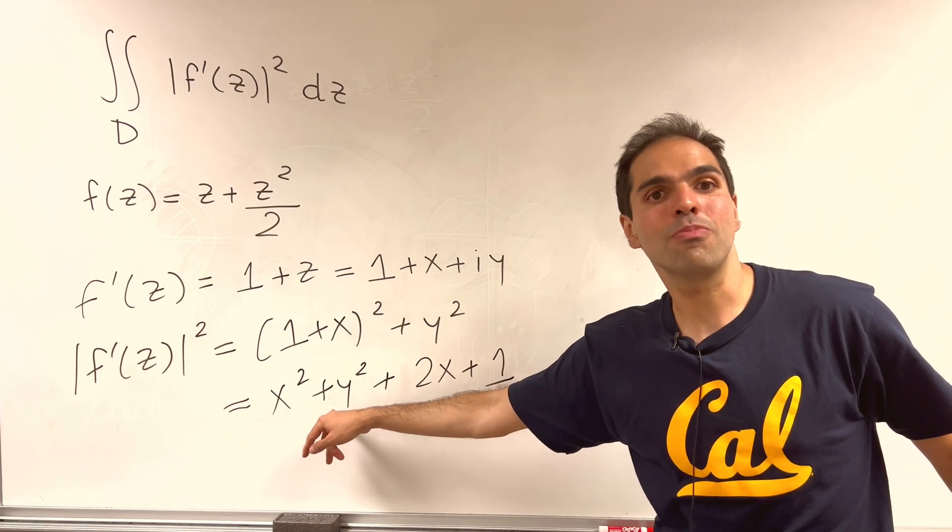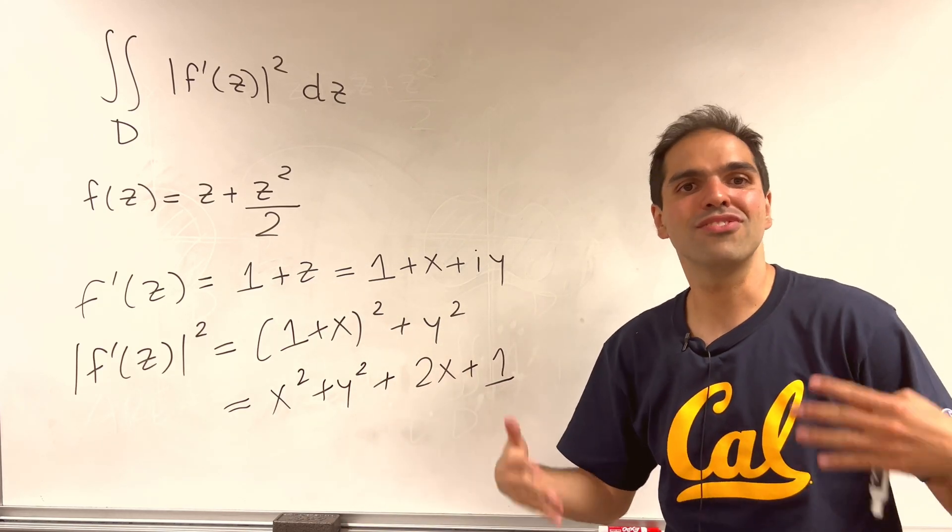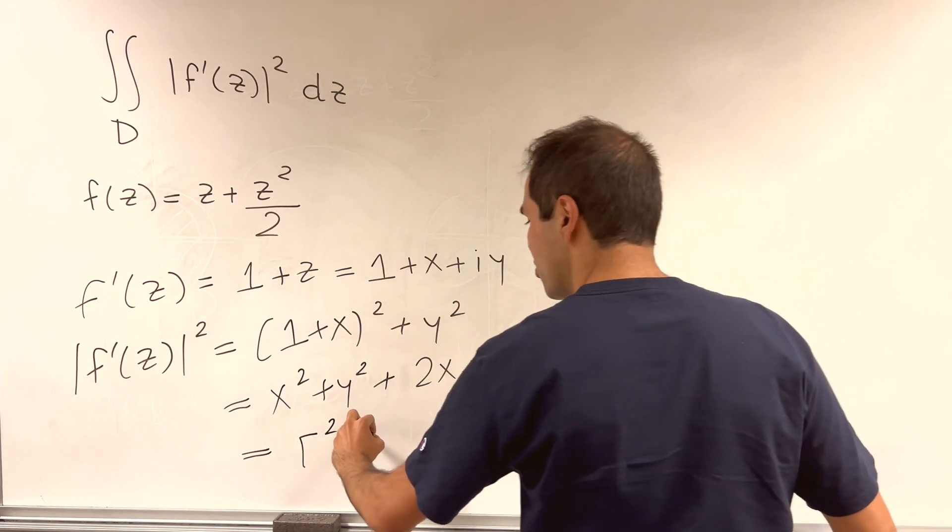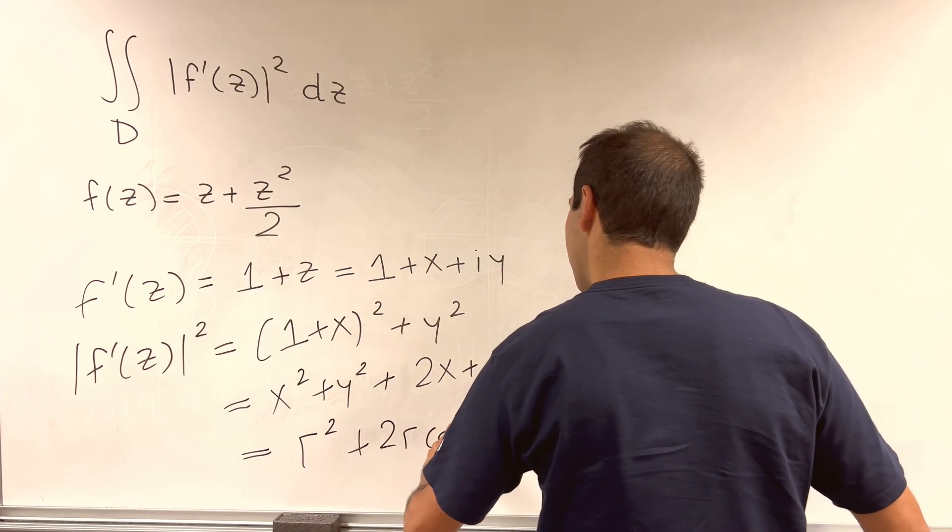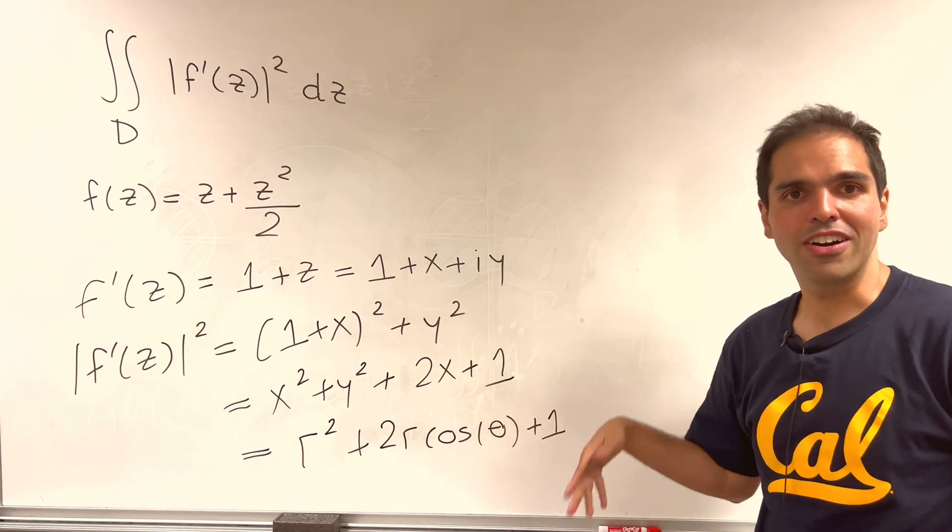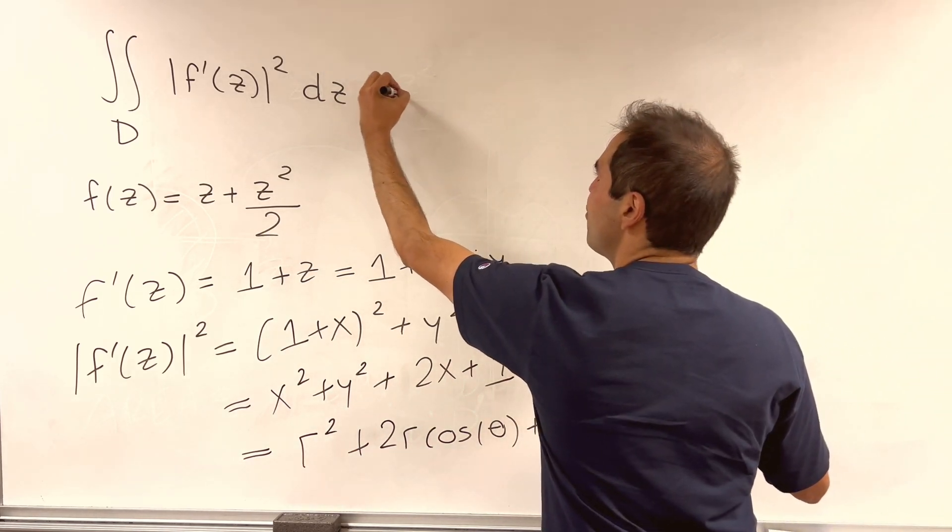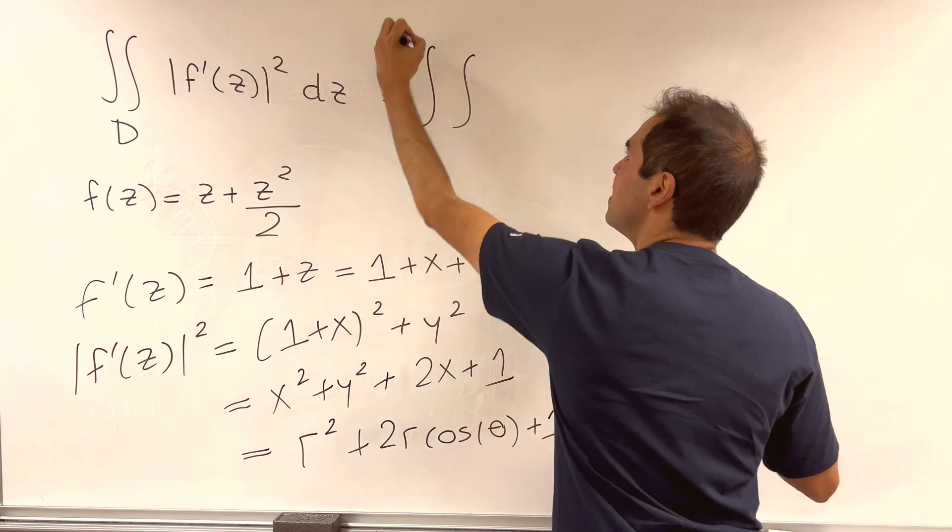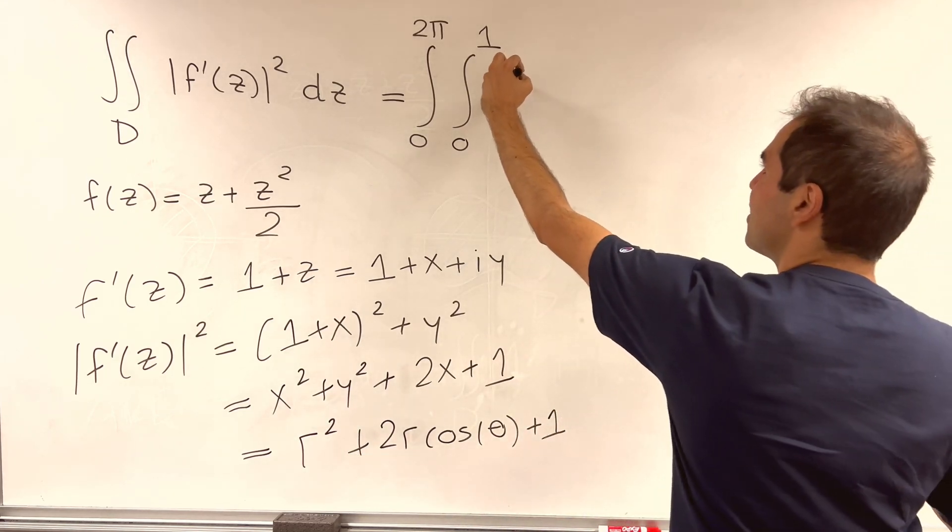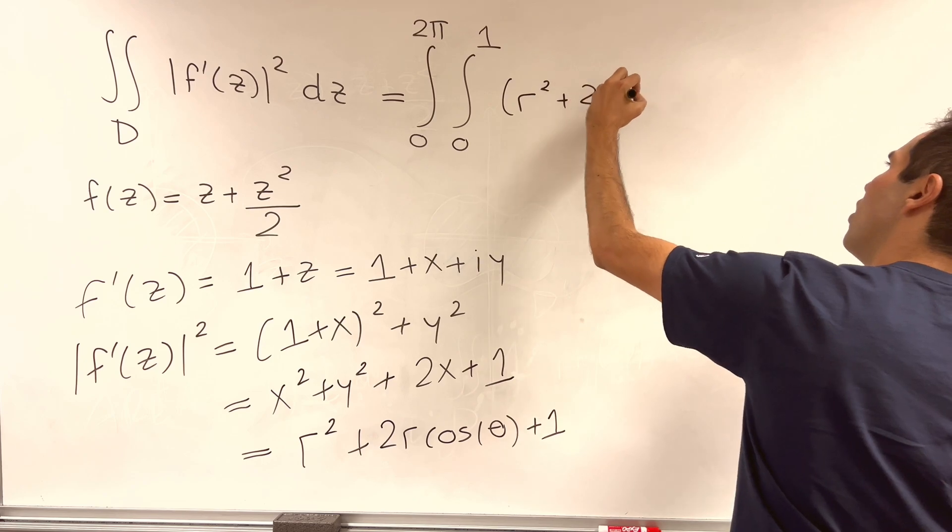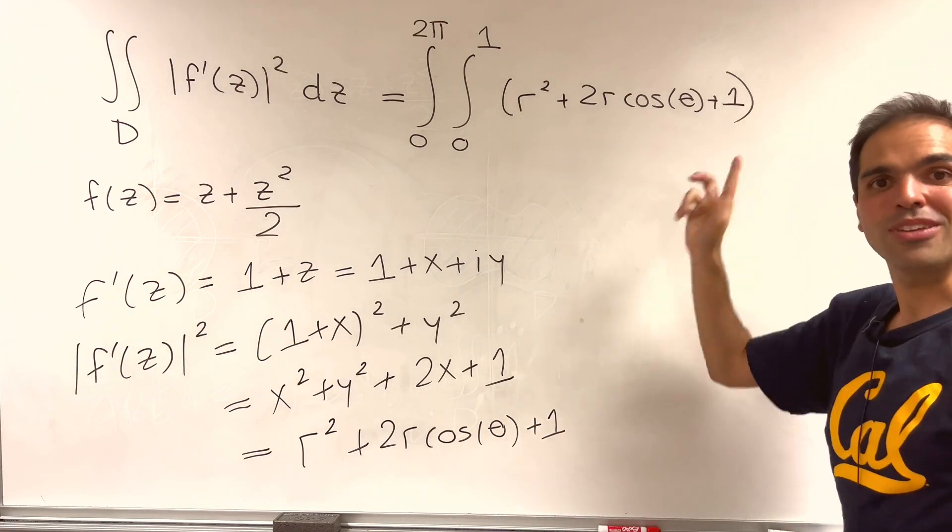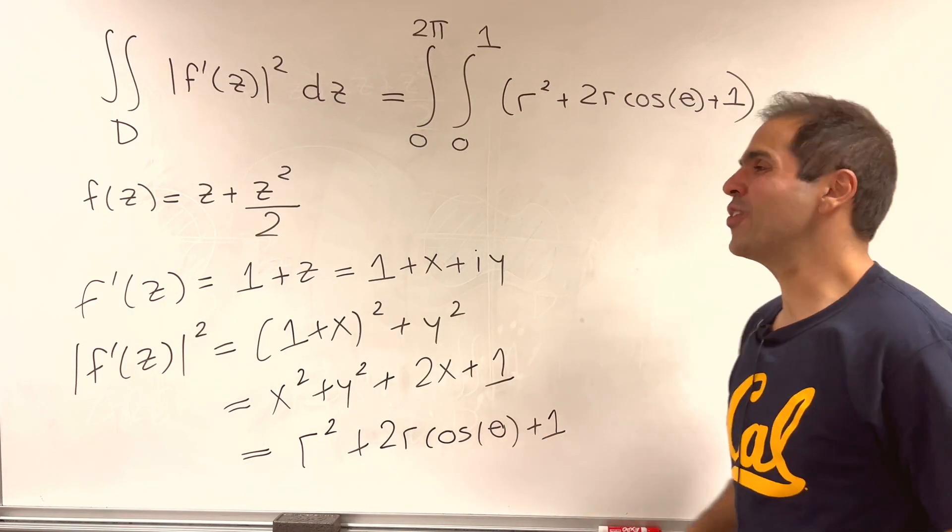And well, because we have x squared plus y squared, this is very suggestive to use polar coordinates. So in polar coordinates, this just becomes r squared plus 2r cosine theta plus 1. So all we need to do is integrate this function with polar coordinates. And therefore, since we have the unit disk, this is just the integral from 0 to 2 pi, integral from 0 to 1 of this function, r squared plus 2r cosine theta plus 1, times a polar thing, which is r dr d theta.